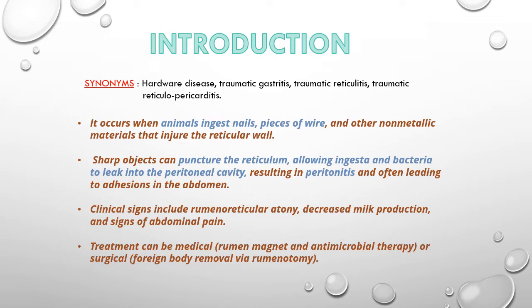Coming on to the introduction of this disease. The synonyms of this disease — it is also known as Hardware Disease, Traumatic Gastritis, Traumatic Reticulitis, and Traumatic Reticulopericarditis. TRP occurs when animals ingest foreign objects like nails, pieces of wire, and other non-metallic materials that injure the reticular wall. Sharp objects that can puncture the reticulum allow ingesta and bacteria to leak into the peritoneal cavity, which may result in peritonitis, often leading to adhesions in the abdomen in chronic cases.